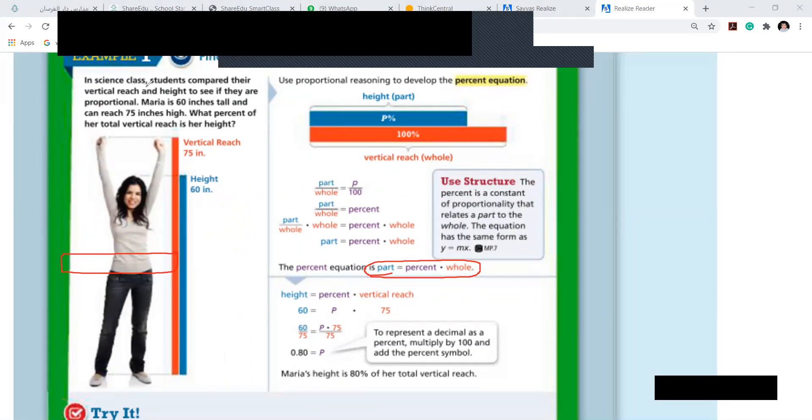Now, in science class, students compare their height, their vertical reach and height, to see if they are proportional. Maria is 60 inches tall and can reach 75 inches high. What percent of her total vertical reach is her height? Okay, she is 60 inches, she reaches 75. 60 out of 75. You know 75 is the total and her height is 60. 60 out of 75, and I don't know the percentage.